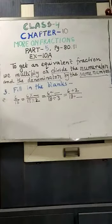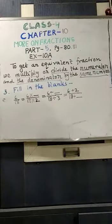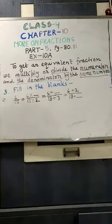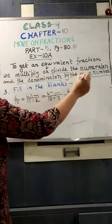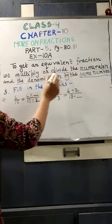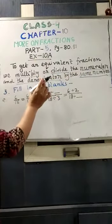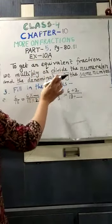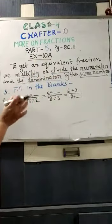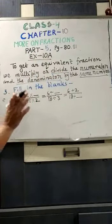You can see I have written on the board: to get an equivalent fraction, we multiply or divide the numerator and the denominator by the same number. I have written this again because you have to remember this, otherwise you will not be able to do it.